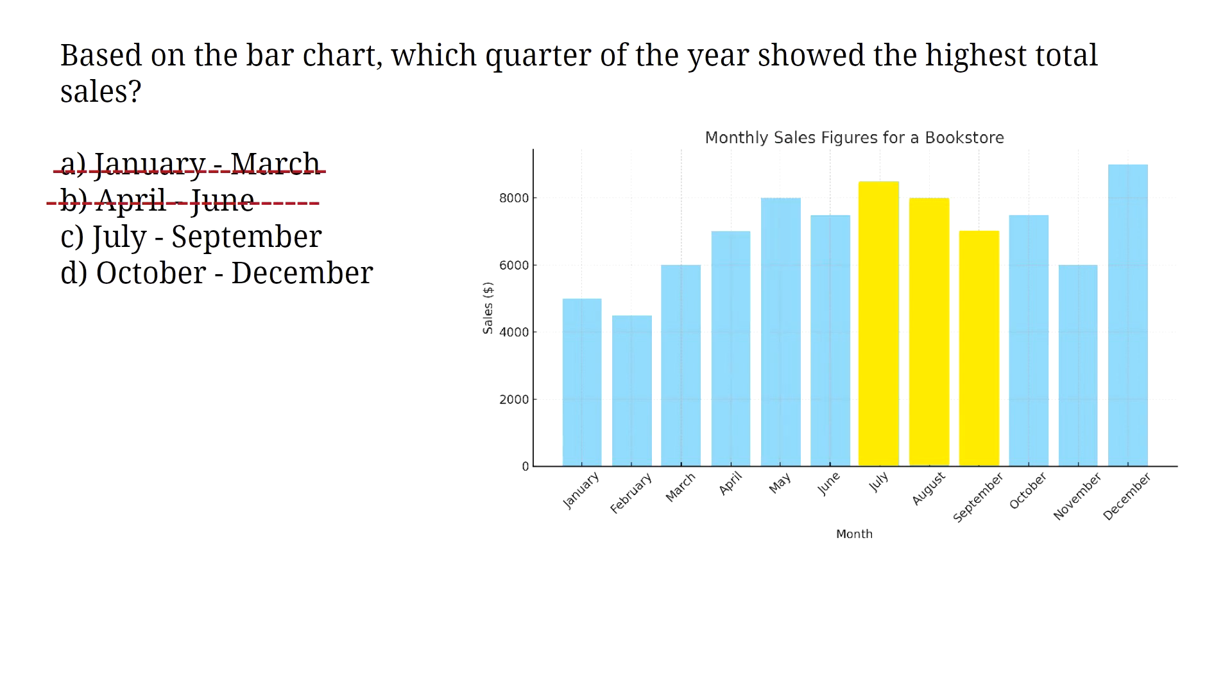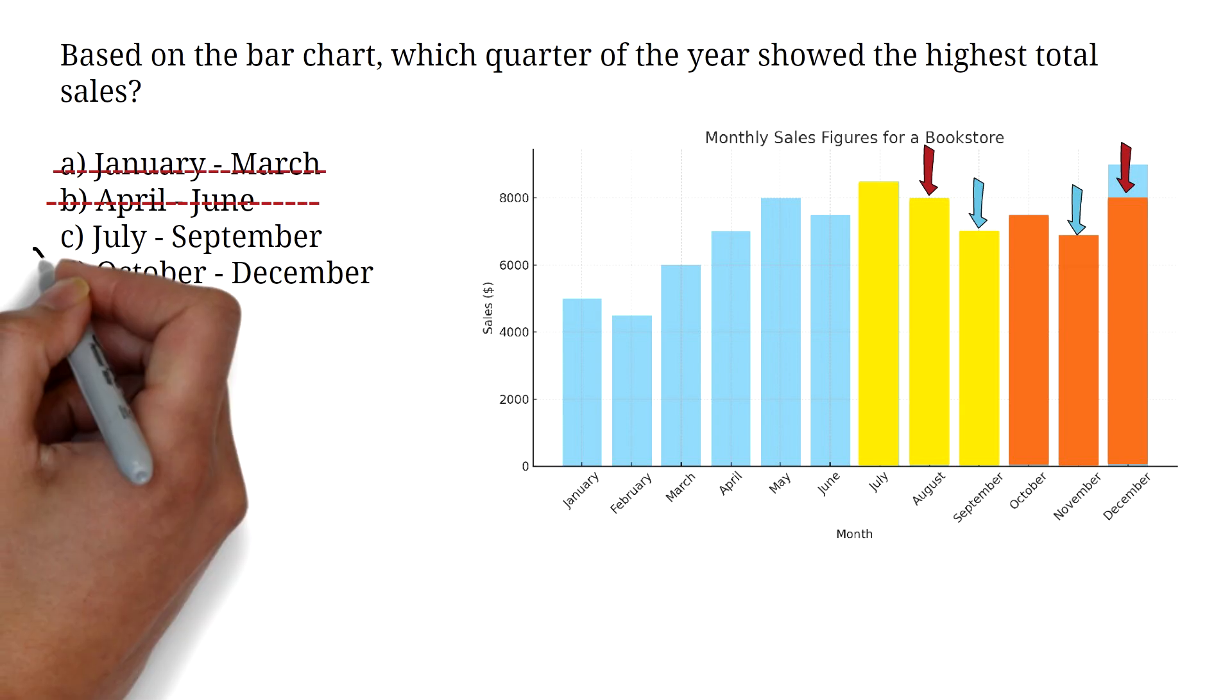Now, we compare the third quarter and the fourth quarter. This is where there is a little bit of work. I will cut off this part and place it here. By doing that, the September and November will be the same. August and December will also be the same. So we just have to compare July and October. We can see that July is more than October. This means the third quarter had the greatest sales. So the correct answer is option C, July to September.